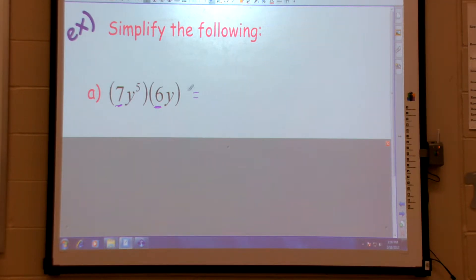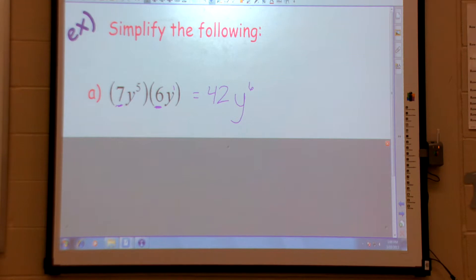Okay, so I do multiply that. 7 times 6 is 42. But now when I do the y, that's when I add the powers. To the 6th.